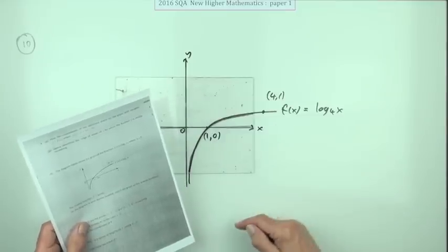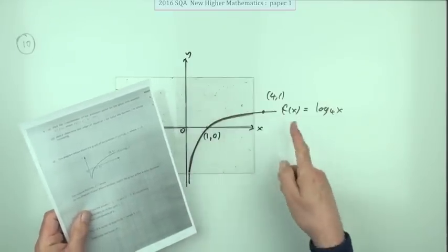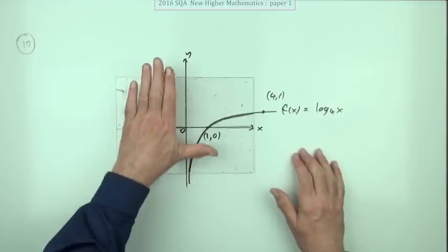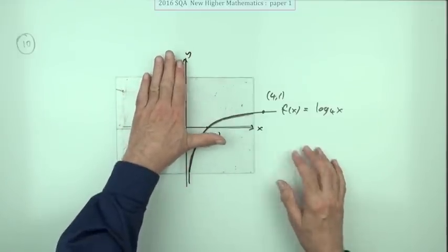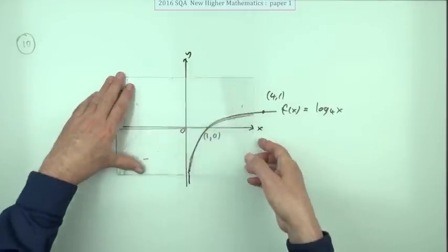The inverse function exists; sketch the inverse function. Well, the inverse function simply means interchanging the answers for the input numbers, interchanging the y and x axis, so we just end up looking like this.